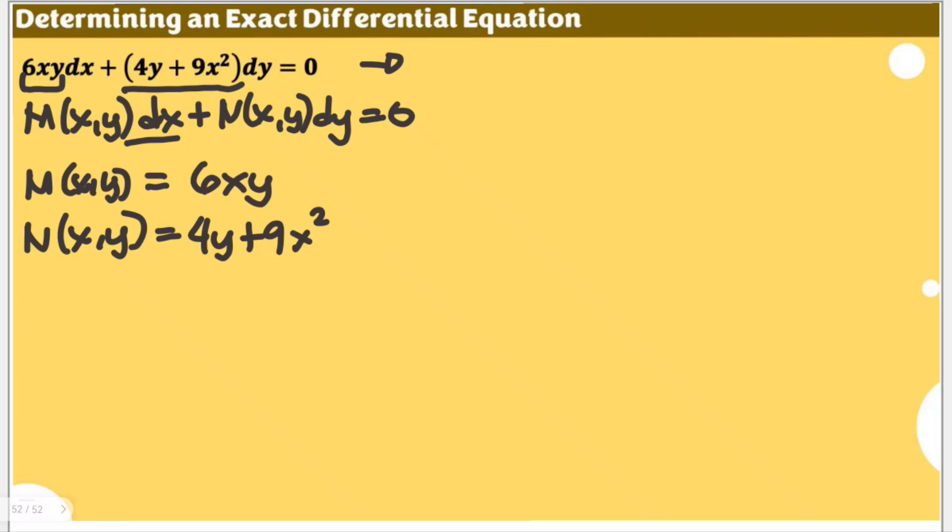Now that we are sure with these two functions, to determine whether this is an exact differential equation or not, we will need to establish the partial derivative of M with respect to y equal to the partial derivative of N with respect to x. And if we could establish this, then we can say that the differential equation given is an exact DE. But if it's not, then it's a non-exact differential equation.